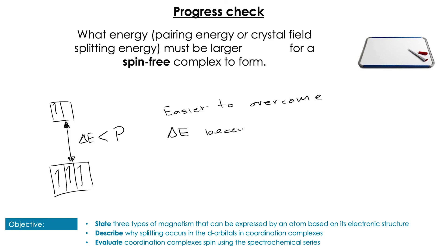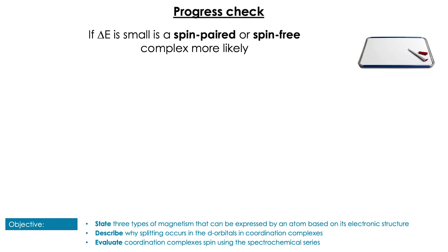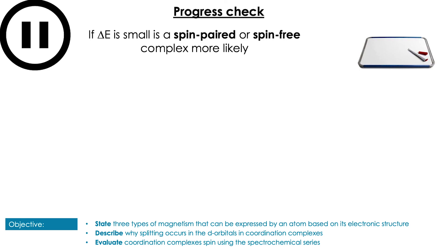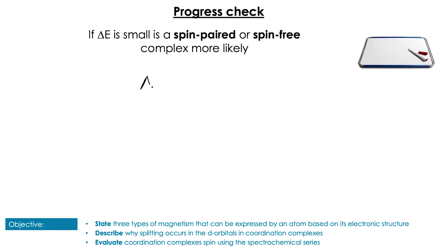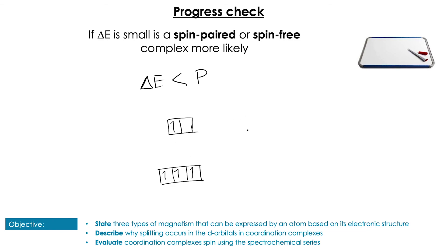That means it requires less energy to overcome delta E than it does to pair electrons. Next question: if delta E is small, is a spin-paired or a spin-free complex more likely? If delta E is smaller than P, we preferentially fill the high-energy orbitals before pairing electrons in the lower-energy orbitals, so a spin-free complex is more likely.